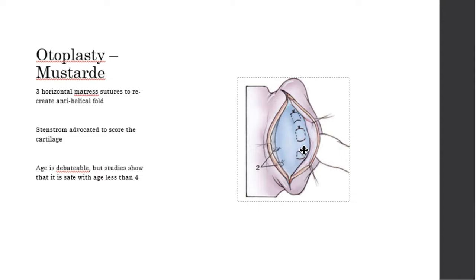Cummings also discusses the Stenstrom technique, which essentially involves scoring the cartilage before placing the sutures. The appropriate age for otoplasty is not consistently agreed upon. The reviewed paper states it is safe to perform otoplasty in children less than four years old with robust results. Kathy likely performs straight otoplasties somewhere between four and six years old.